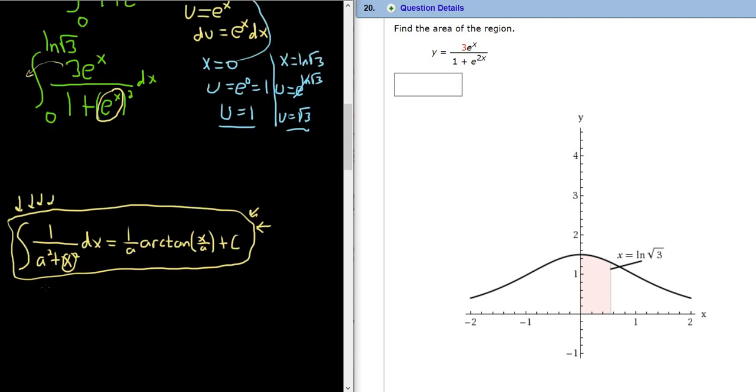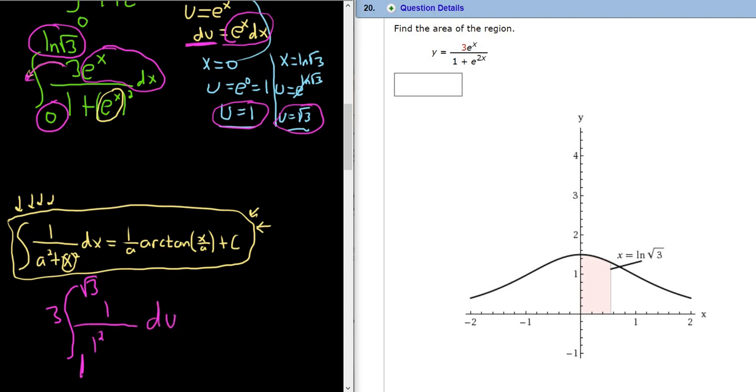So I'm going to come down here because there's more room. We'll pull that 3 out. So we did that. And the 0 is going to become 1. So 1. And the natural log of the square root of 3 will become the square root of 3. So square root of 3. And we're left with e^x dx. But that's here, and we said that's du. So that's just 1 over, and we have the du here. And then we have 1 squared, that's our 1. And this is u squared, so plus u squared.